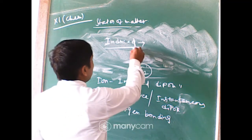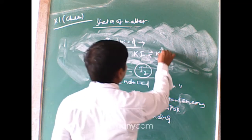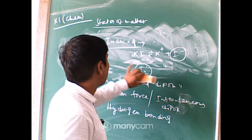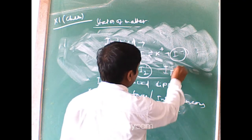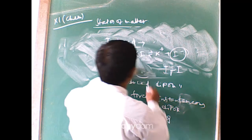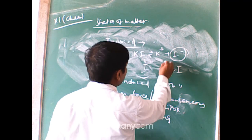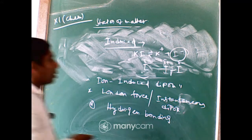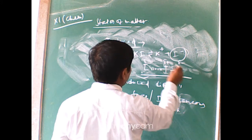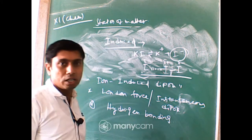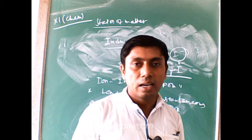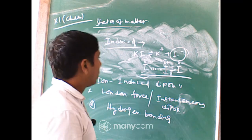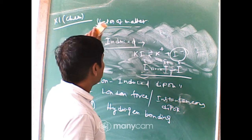KI in equilibrium gives K⁺ and I⁻, so the concentration of I⁻ is high in the solution. Iodine (I₂) is initially a neutral molecule with no charge separation, but in the presence of I⁻ it becomes polarized — developing δ− and δ+ regions. This weak interaction helps dissolve iodine in the medium, illustrating ion-induced dipole interaction.